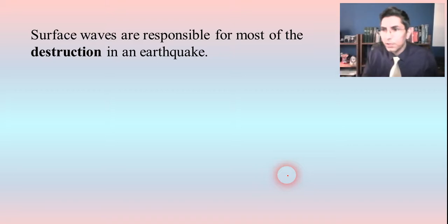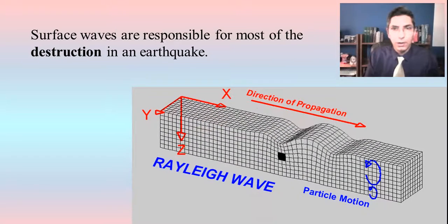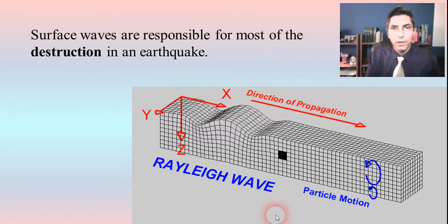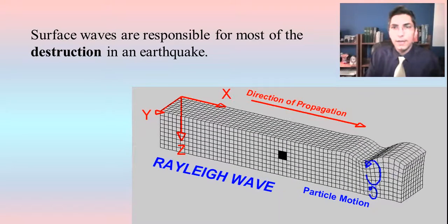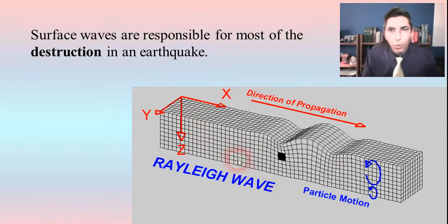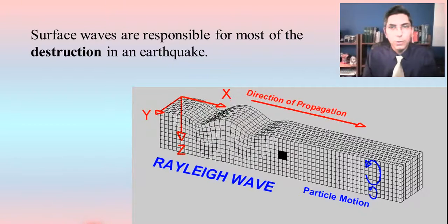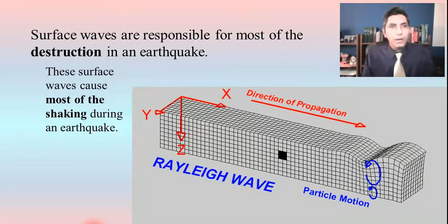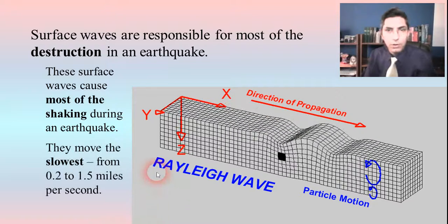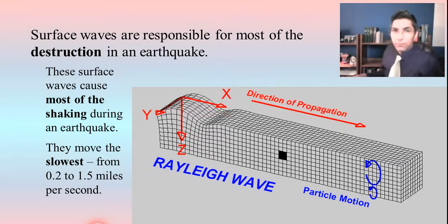Surface waves are actually responsible for most of the destruction in an earthquake. Notice what's shaking here — it's the surface. This causes a twisting motion. In the S waves we saw earlier, it was the whole medium moving, but here it's just the surface, and that's why there's so much destruction — this twisting and turning motion causes most of the shaking during an earthquake, especially in the middle and toward the end. These are sometimes called Rayleigh waves, and they move the slowest — somewhere between 0.2 and 1.5 miles per second.